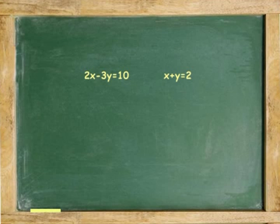One more example. Solve the system by substitution. 2x minus 3y equals 10. x plus y equals 2. There is no y equals y here. So, to substitute, first solve one of the equations in terms of x or y.